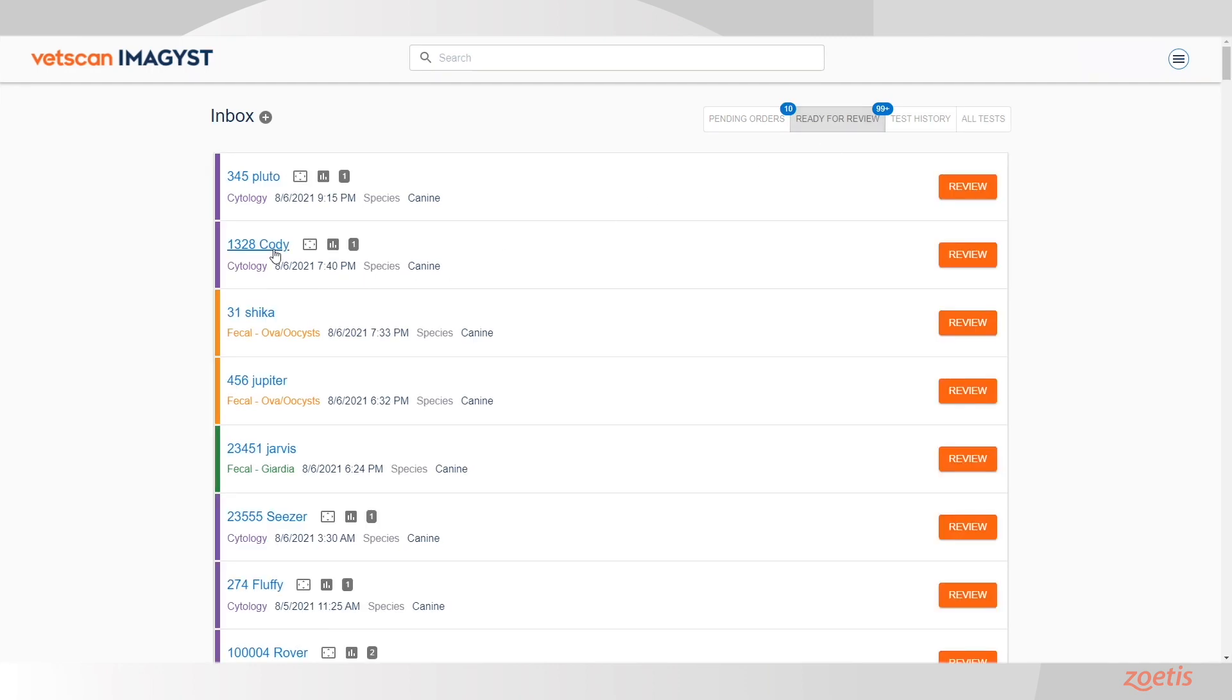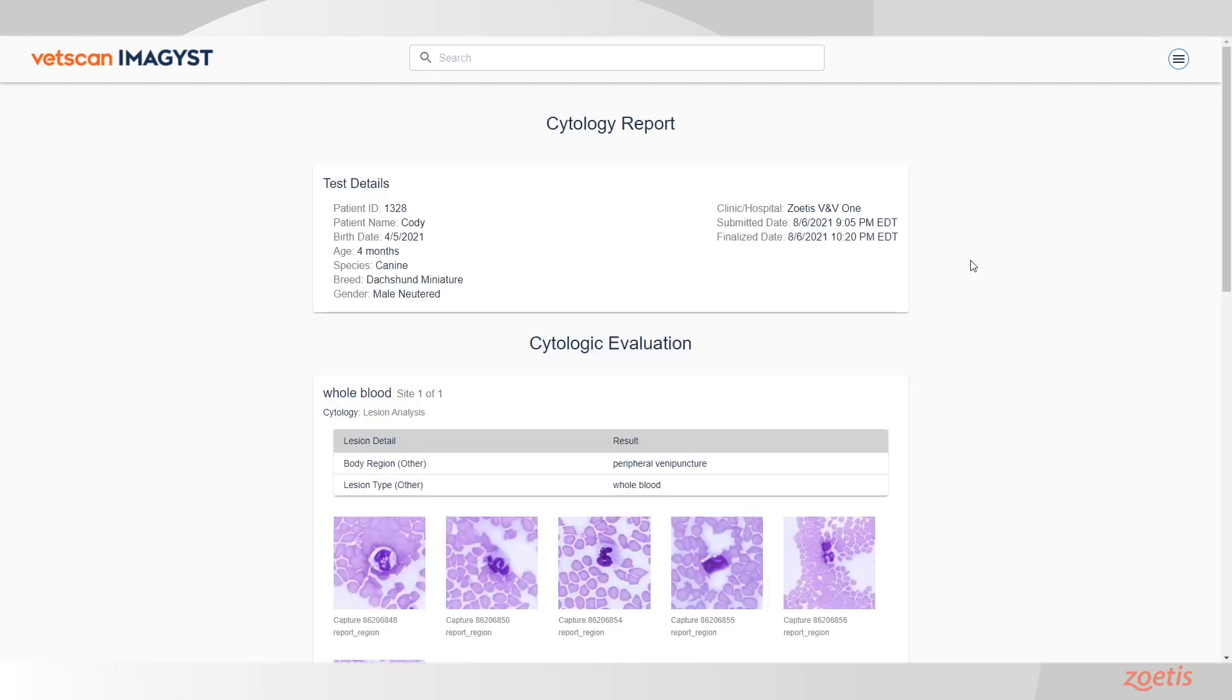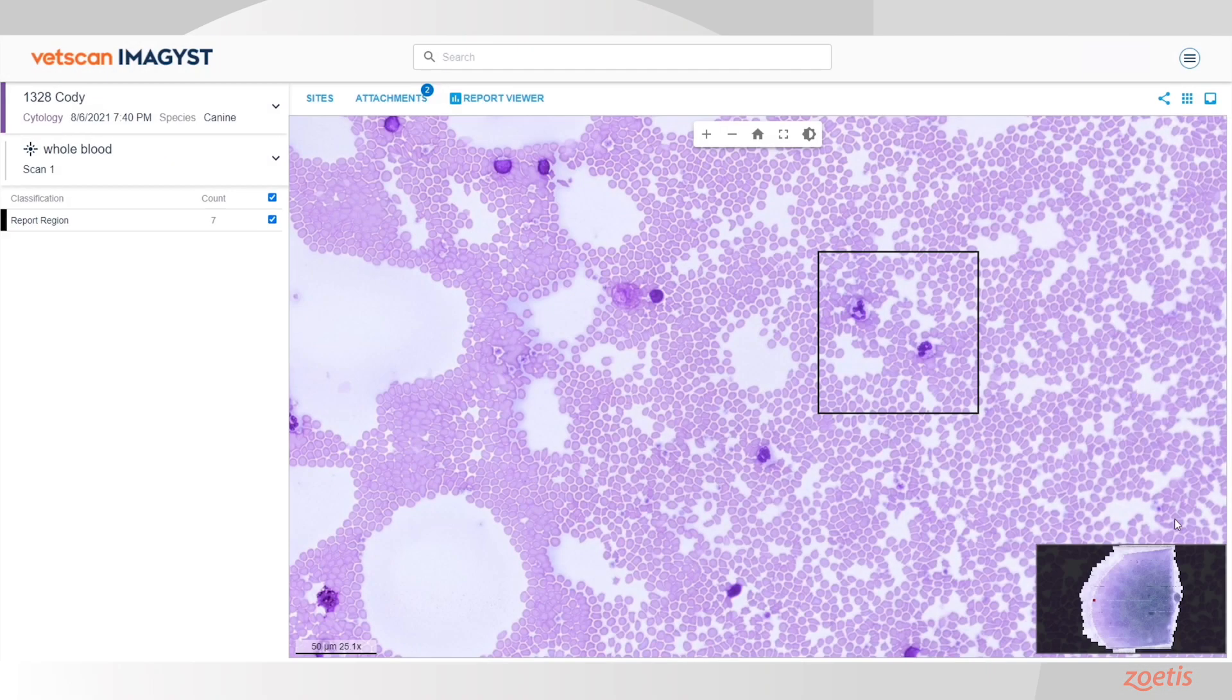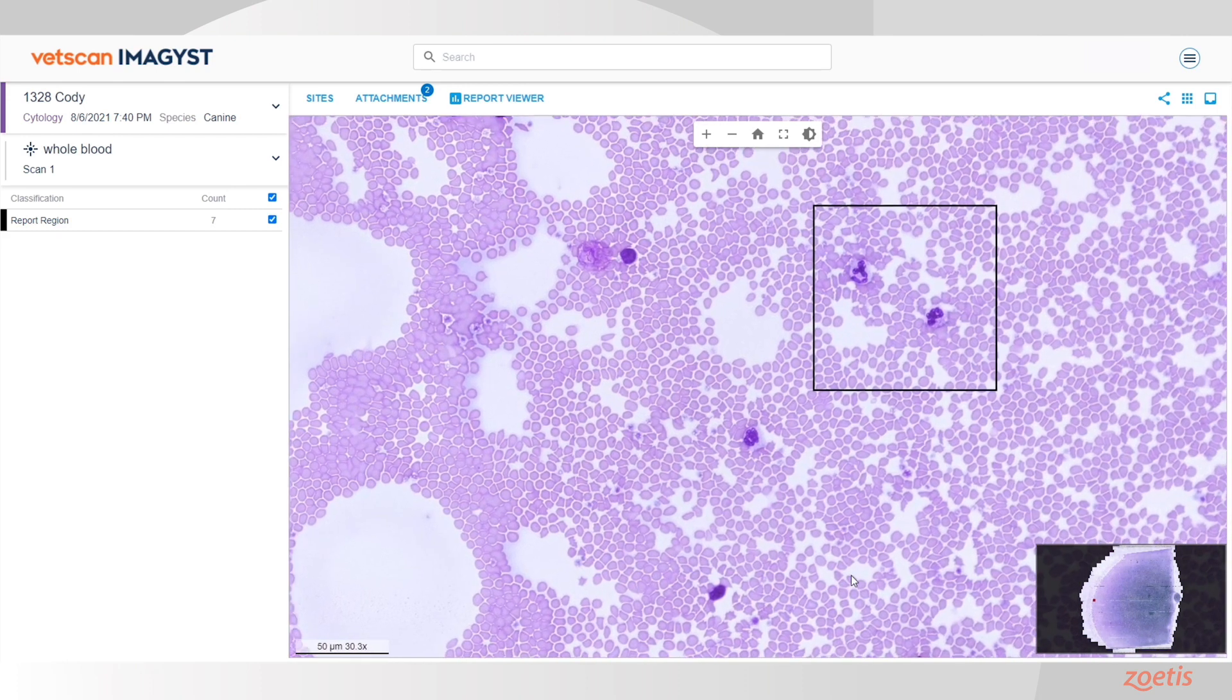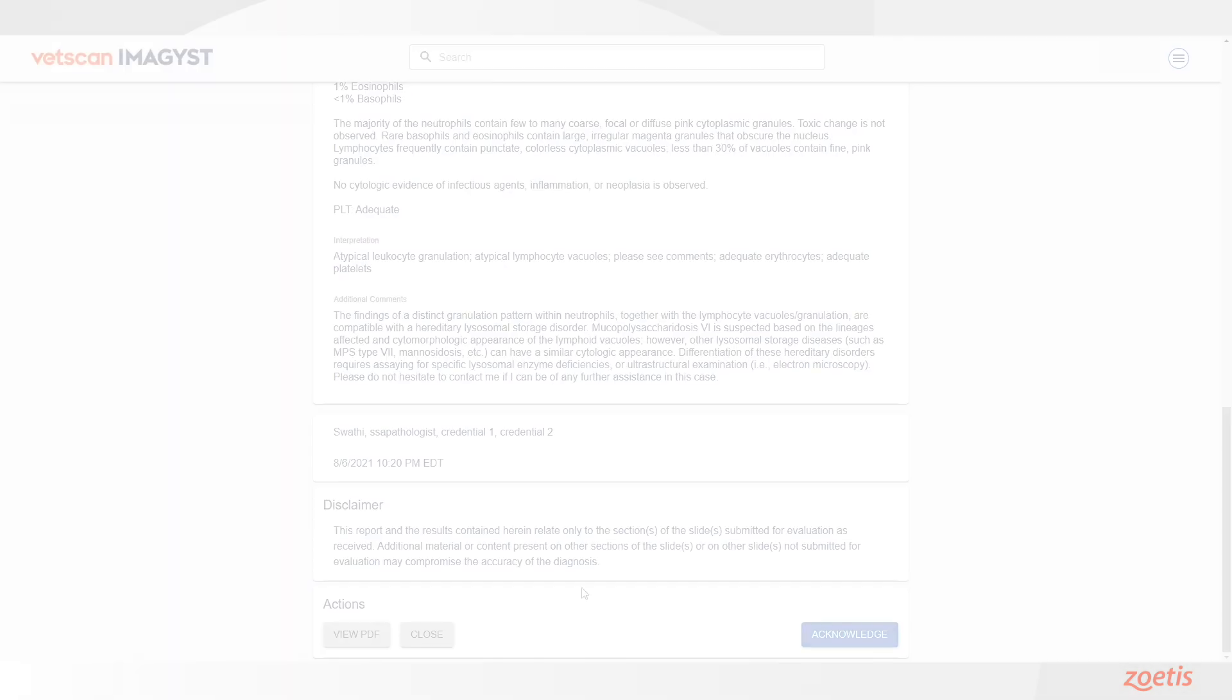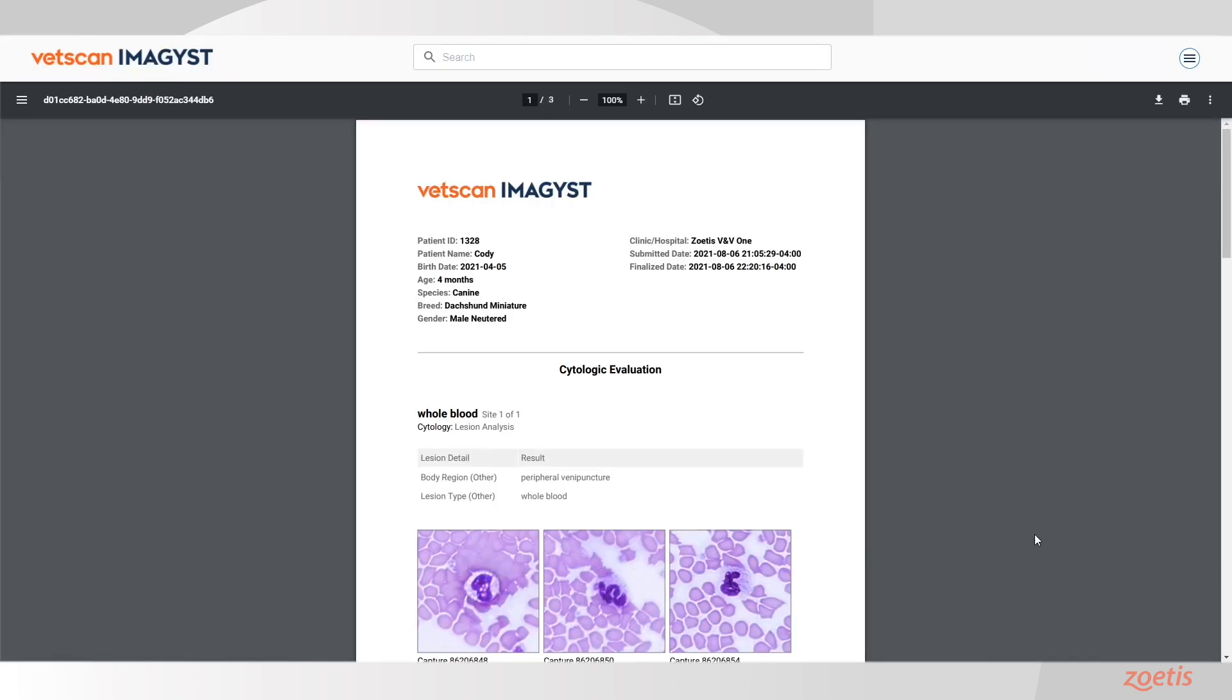If you find your specific test order and click on the Review button, the report will open in the Report Viewer. Anyone can review the results within VetScan Images with a shareable PDF report.